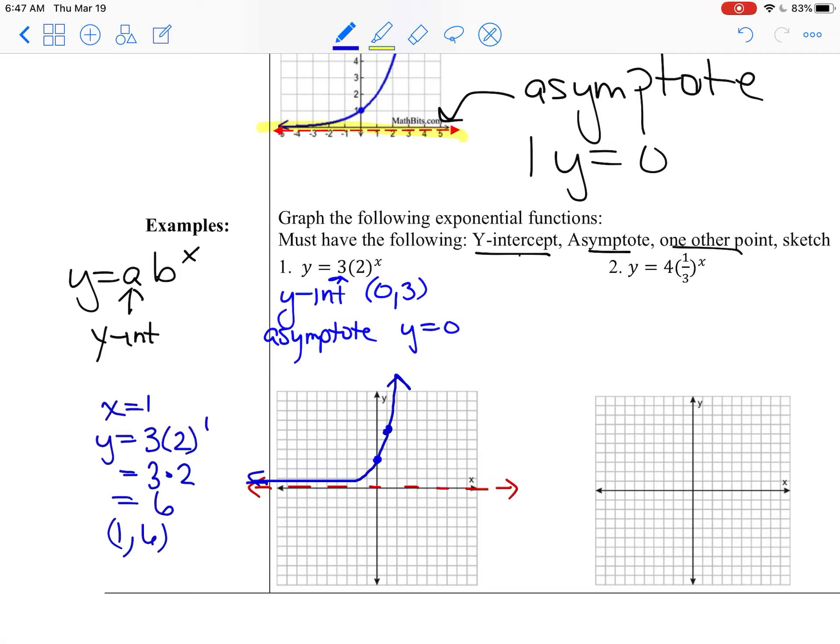But I do need to see the y-intercept. I need you to tell me the asymptote. And I need to be able to see one other point.